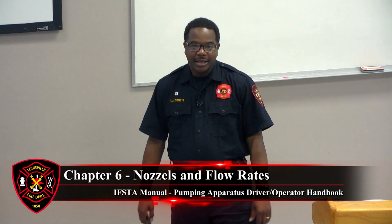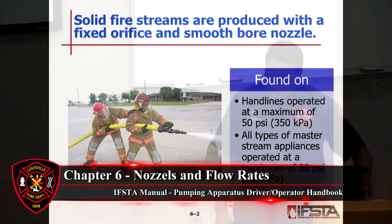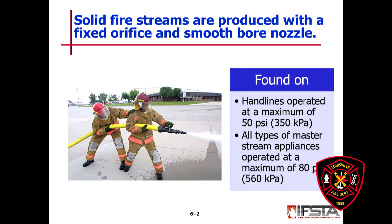Solid stream nozzles are produced in a fixed orifice or smooth bore design. The hand line operated ones, such as our big pipes, are operated at a maximum of 50 PSI, and we usually use these nozzles for reach and penetration.